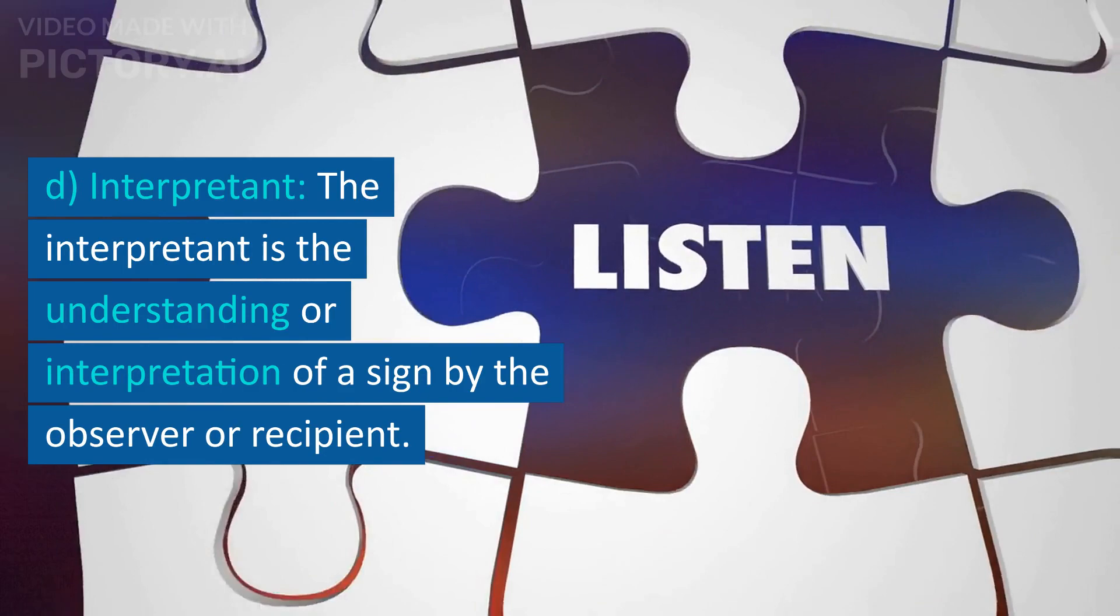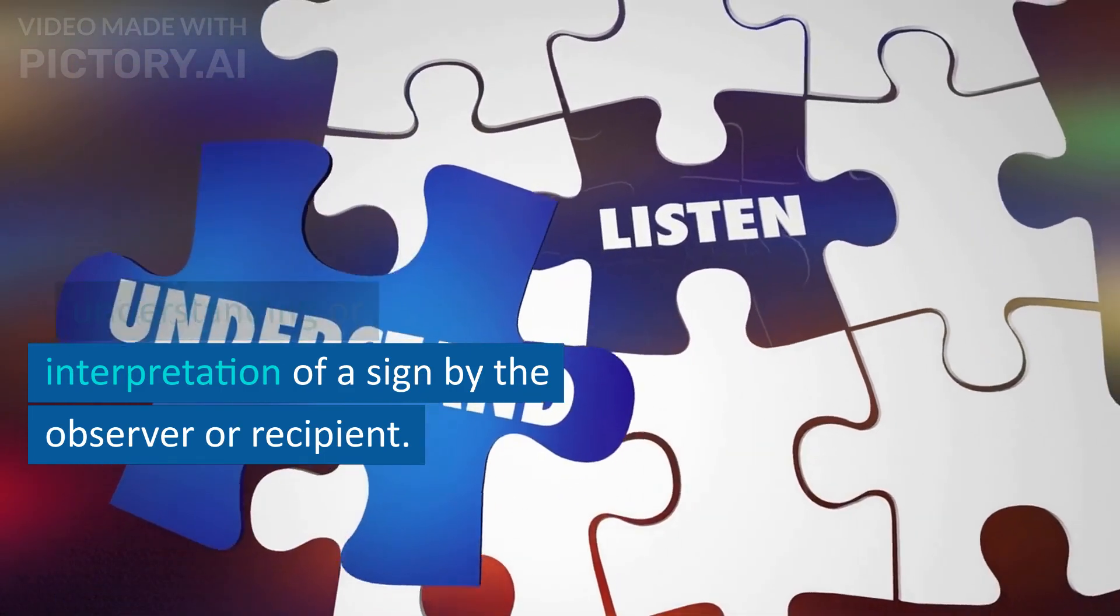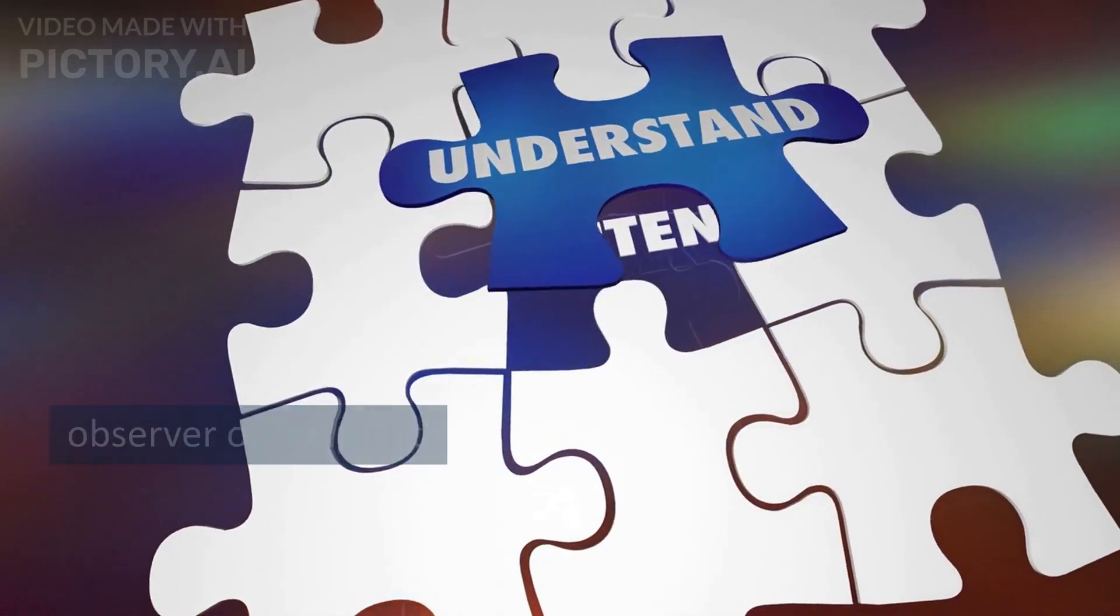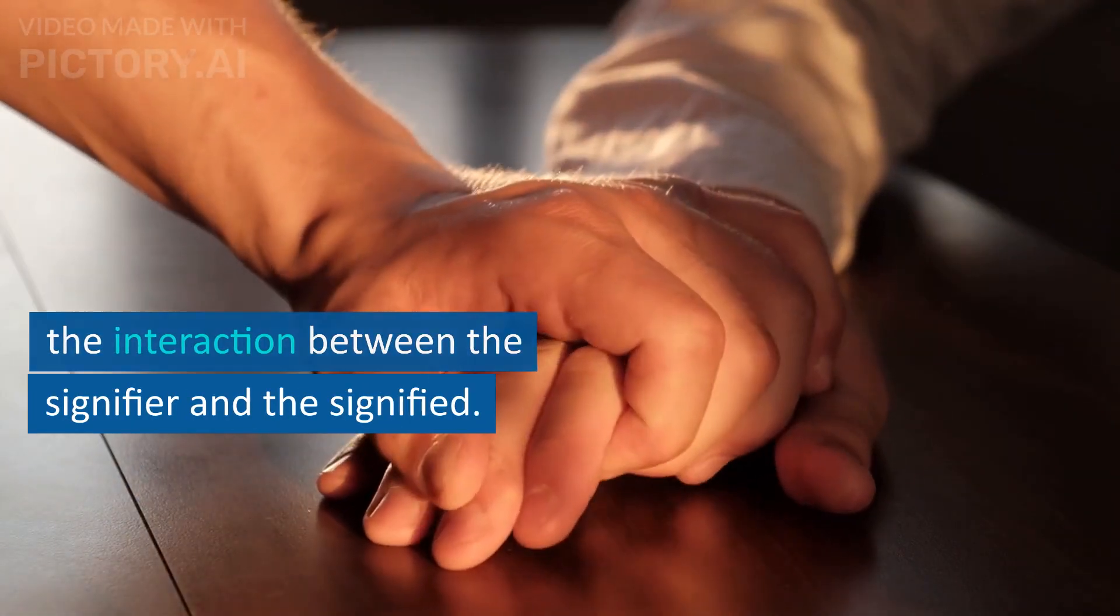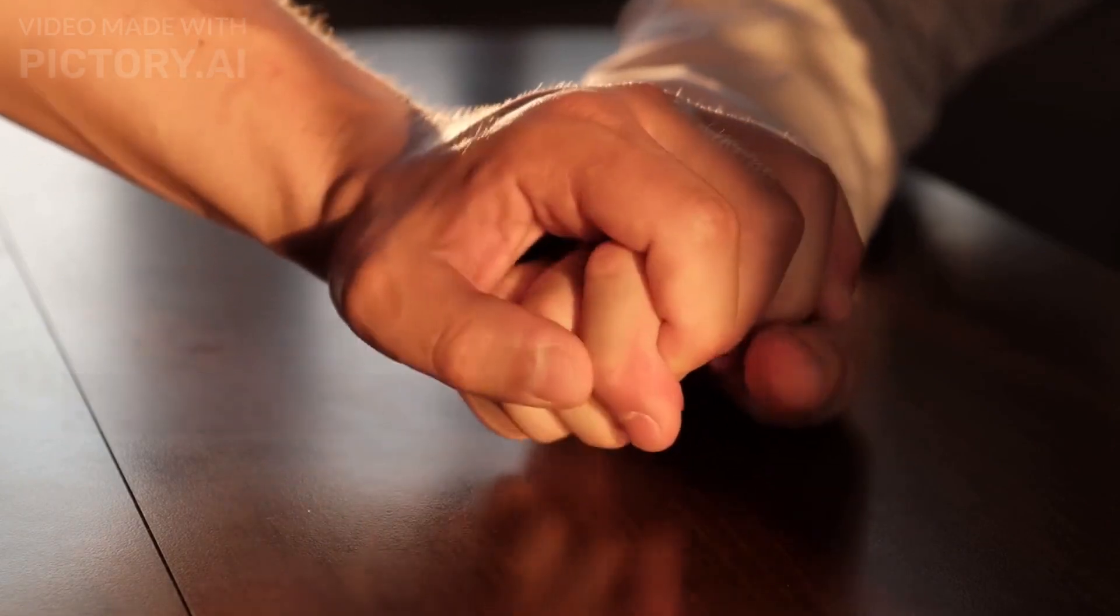Interpretant: The interpretant is the understanding or interpretation of a sign by the observer or recipient. It refers to the meaning or understanding that arises from the interaction between the signifier and the signified.